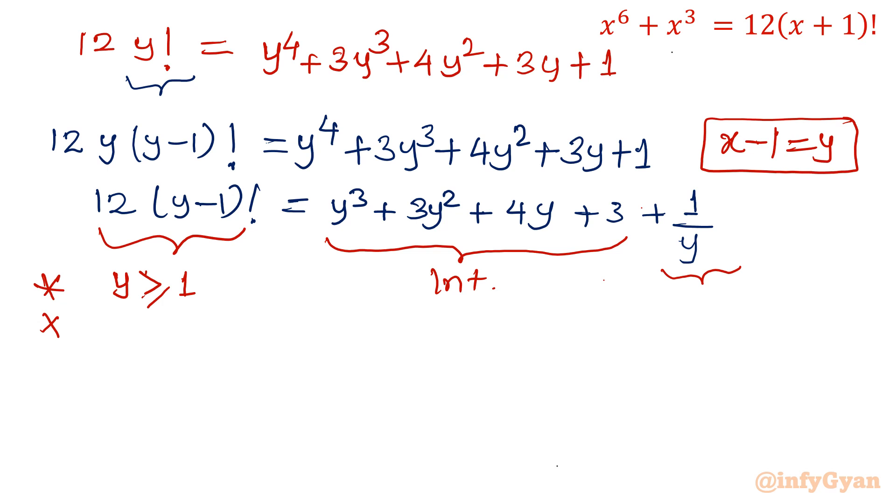So our LHS is positive integer, so RHS should match it. This term is already integer, so only 1 over y has to be integer. Now important conclusion is, if this term has to be integer, then y must be equal to 1. If y is other than one value, then this will be fraction—1 over 2, 1 over 3, 1 over 4—and it will make the RHS fractional value. So important is y must be equal to 1.